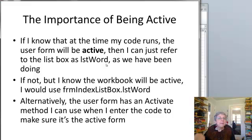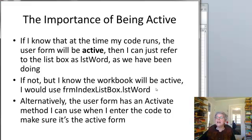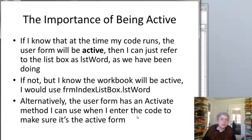If I can't be sure the form will be active, but I know the workbook will be active, then I would use another level of the hierarchy. I would say it's in "formIndexListBox" and then use a dot and "listWord." This navigates me into the form and then into the name of the particular control. There often isn't a reason to do something in code with a control that's not on an active form, but in case you needed to, this is how it works.